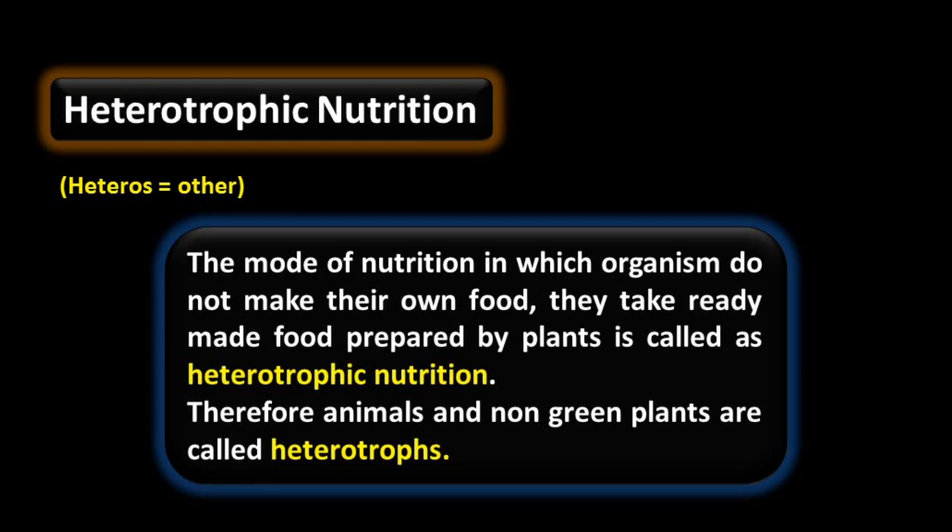Animals do not make their own food, so animals are called heterotrophs. Some non-green plants also do not make their food by photosynthesis, so non-green plants are also called heterotrophs.